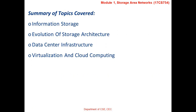Now that we have reached the end of Chapter 1, let us summarize the topics discussed. We understood why information storage is required, defined data, the categories of data, big data, information and so on. We understood how storage architecture evolved from server-centric to information-centric storage architecture. We discussed the components of a data center including application, DBMS, storage, network and host. We also understood the key requirements of a data center including availability, capacity, manageability and so on. At the end, we briefly discussed virtualization and cloud computing. With this, let us conclude lecture 1 of the lecture series on Storage Area Networks. Thank you.